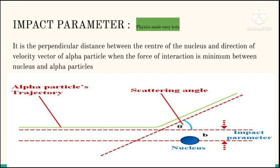Here, you can also observe the angle theta, which is known as the scattering angle. This is the angle between the direction of approach of alpha particle and the direction of scattered alpha particle.